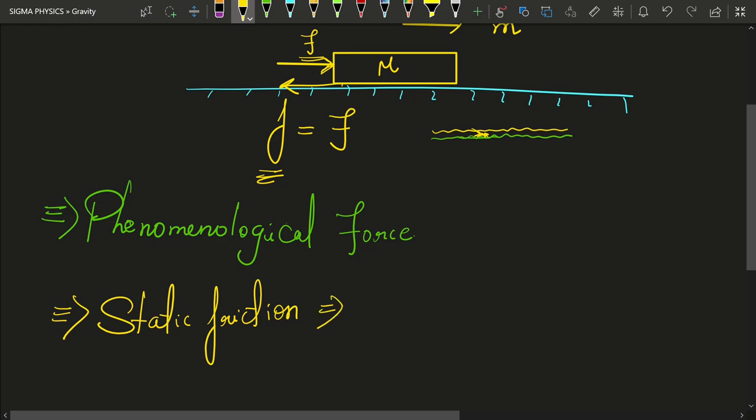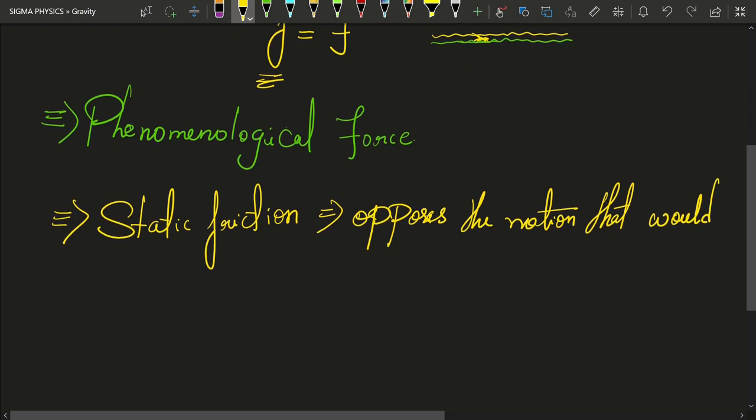Static friction is a friction which opposes the motion that would occur in its absence.